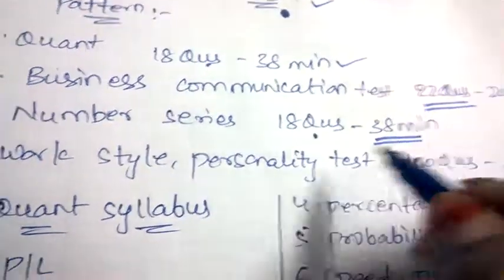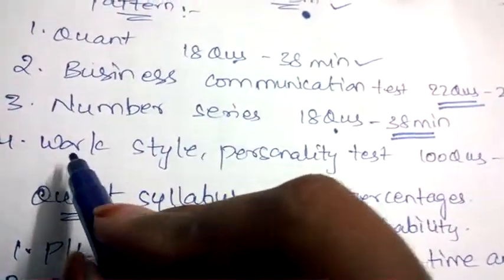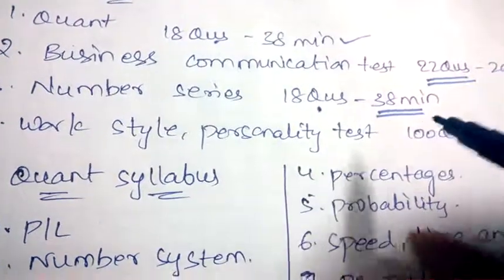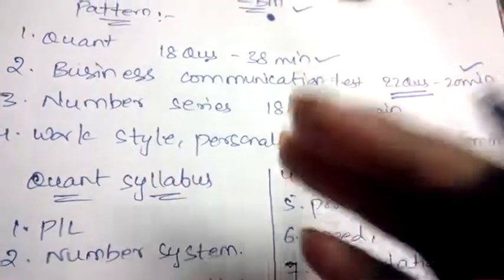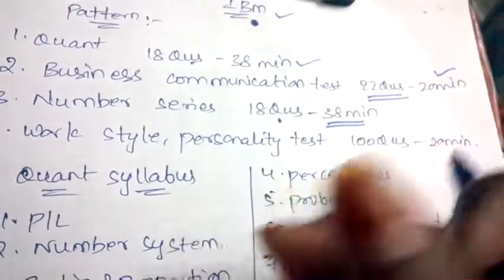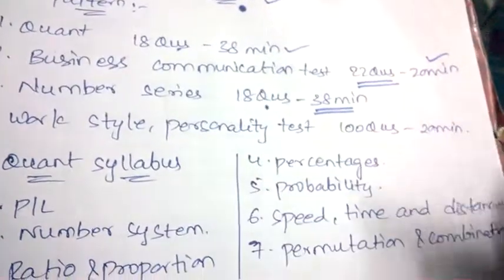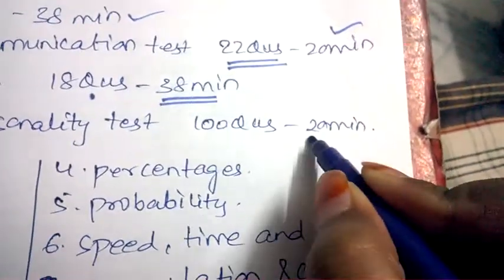Work style and personality test is a sort of test in which your work style and personality behavior is assessed. 100 questions will be asked and you'll be given only 20 minutes. So time management is very important for the written test.